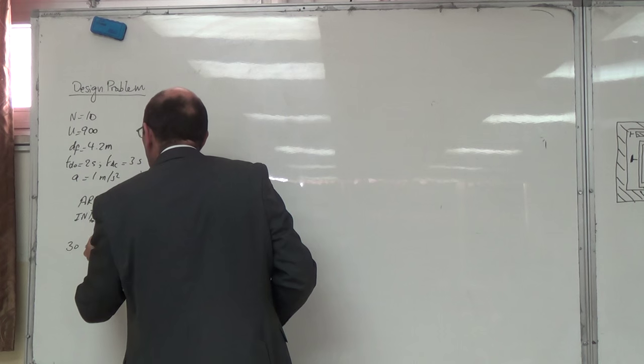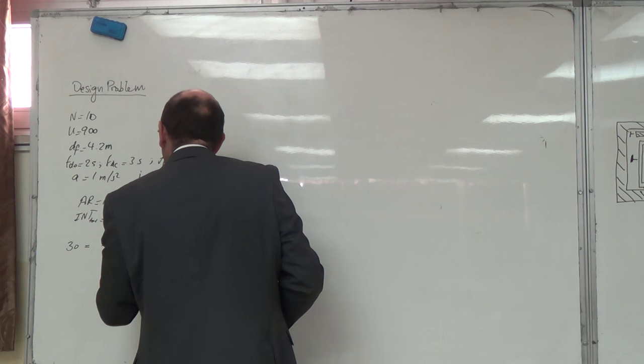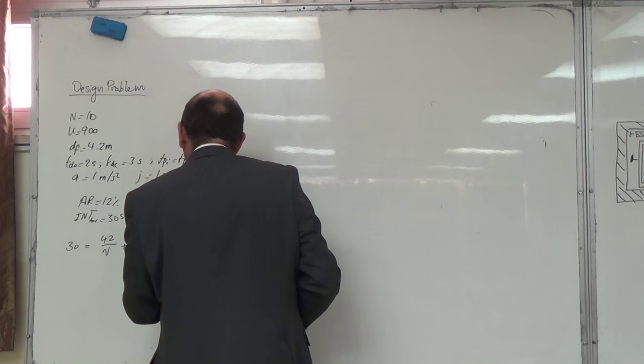عندي عشرة في 4.2، عندي total distance بيصير 42 meters زائد B على واحد زائد واحد على واحد. بتطلع معي B من هون.